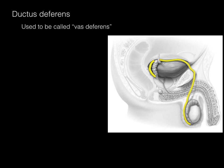Next is the ductus deferens, which used to be called the vas deferens. 'Vas' means vessel, and this isn't a vessel — early anatomists thought it was, and that term has stuck, hence the name 'vasectomy' to cut the ductus deferens as a form of birth control. The term 'vas deferens' is not anatomically correct, so we use ductus deferens, though many clinicians will still use 'vas' in practice.